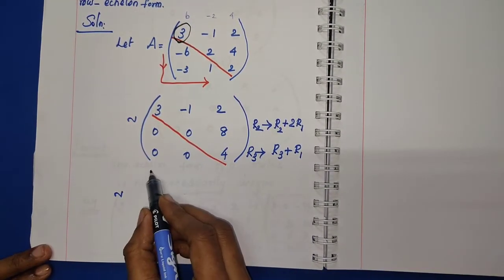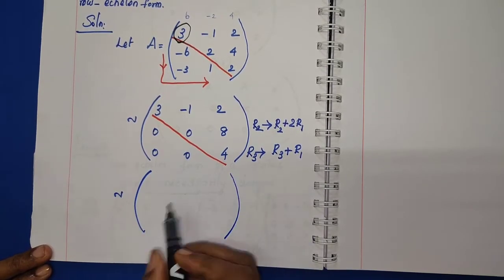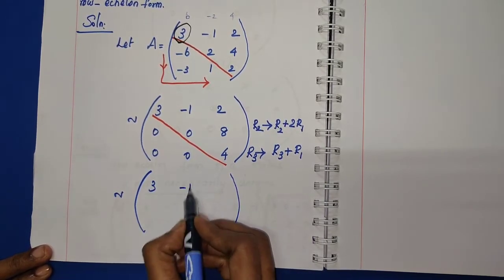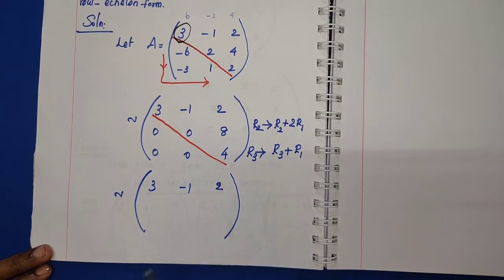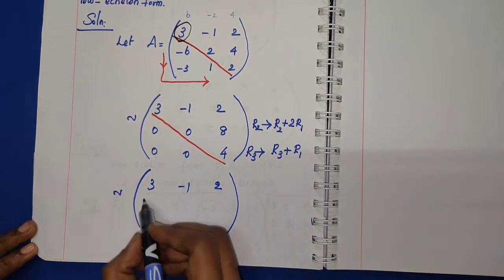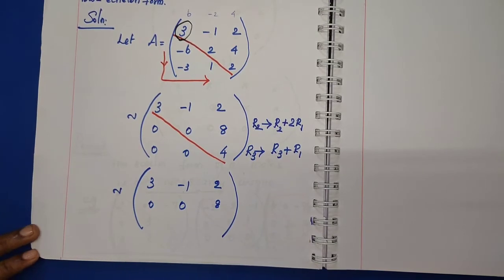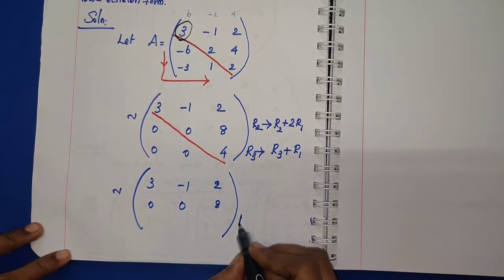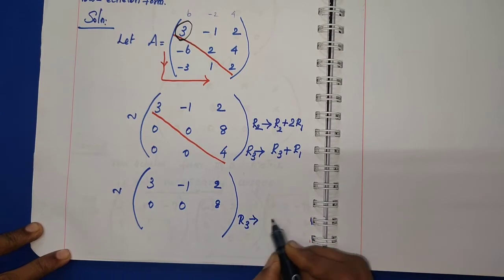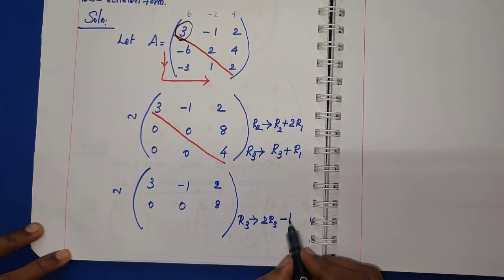One more elementary transformation. You can convert this term in the last line. This is equivalent to: first row change 3, -1, 2. Second row, write as it is. Third row, R3 implies 2R3 minus R2.